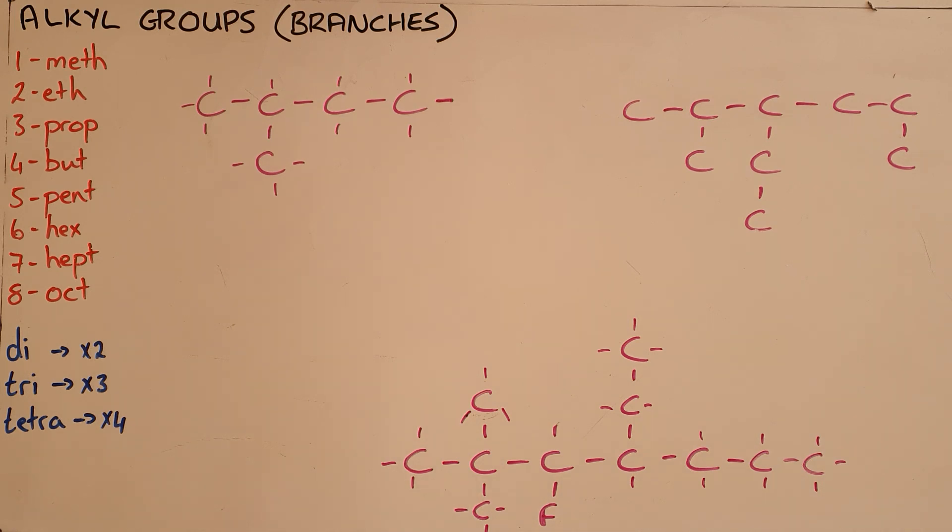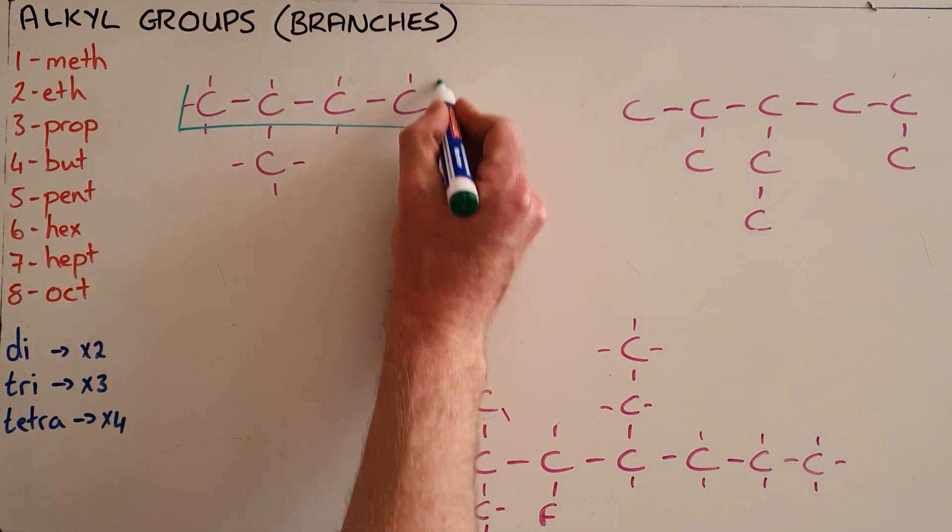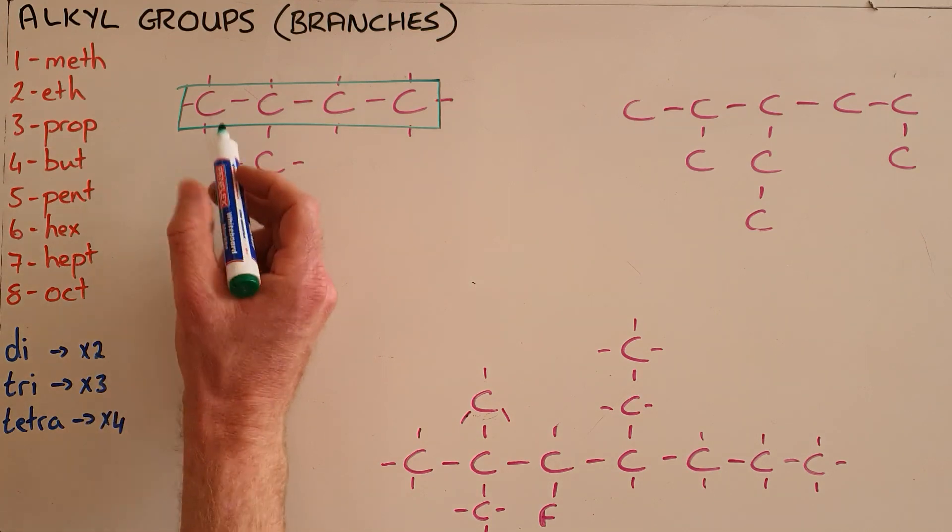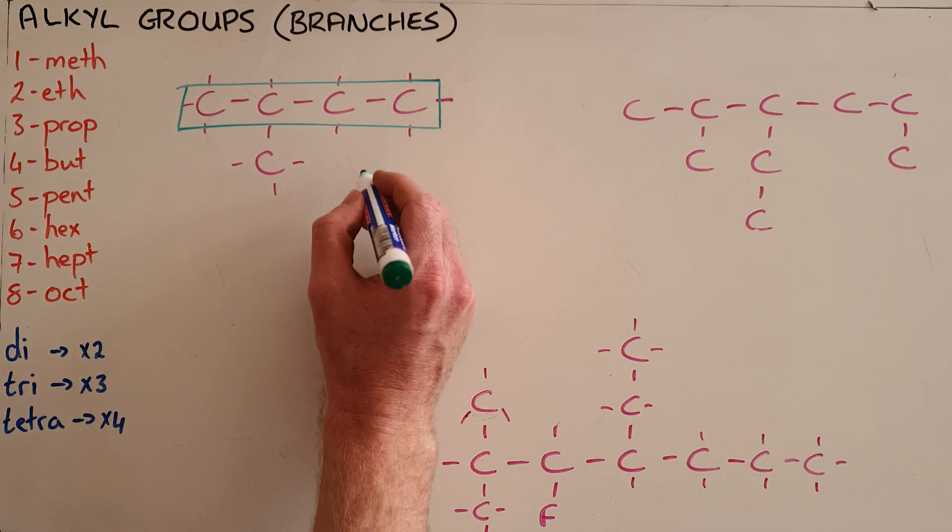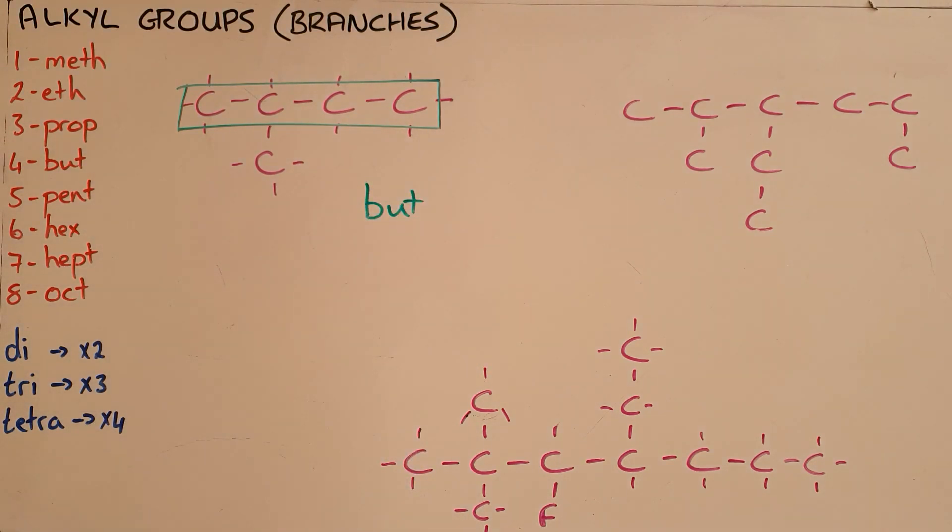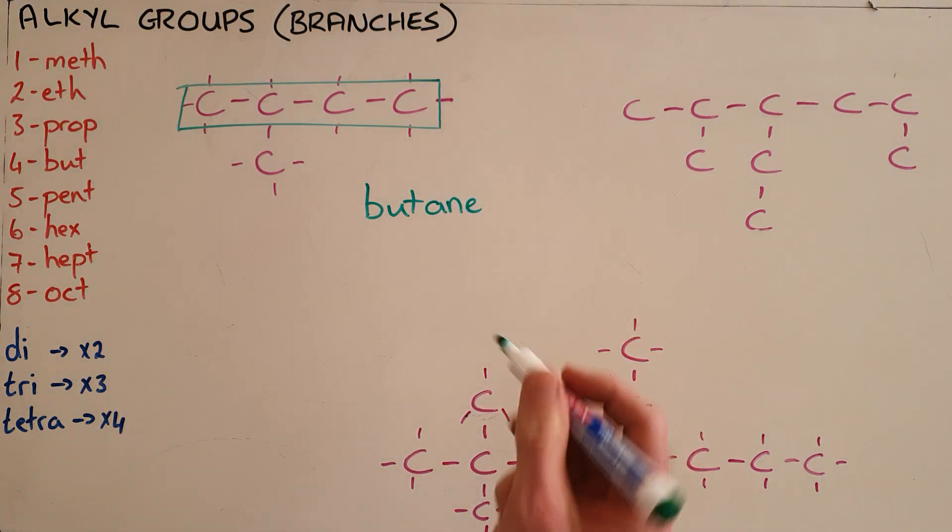Our first step remains the same and that is to identify the longest carbon chain possible in that molecule. So for this example over here our longest carbon chain is one, two, three, four carbons which means that it gets the prefix but. We can see that it contains only single bonds and therefore is an alkane and gets the suffix a-n-e butane.